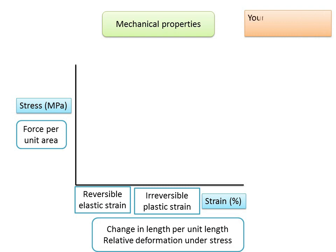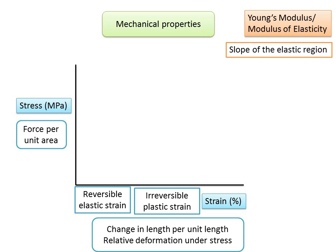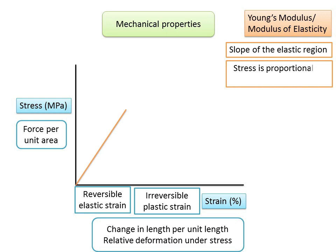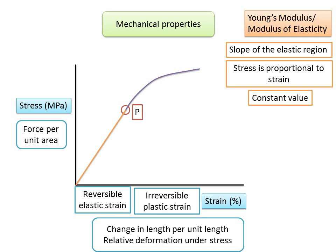An important parameter related to the stress-strain graph is Young's modulus, also known as elastic modulus or modulus of elasticity. It describes the relative stiffness or rigidity of a material, measured by the slope of the elastic region of the stress-strain graph. The straight-line region represents reversible elastic deformation below the proportional limit, while the curved region represents irreversible plastic deformation. Young's modulus is the constant of proportionality — the slope in the elastic range — and is a measure of relative rigidity.